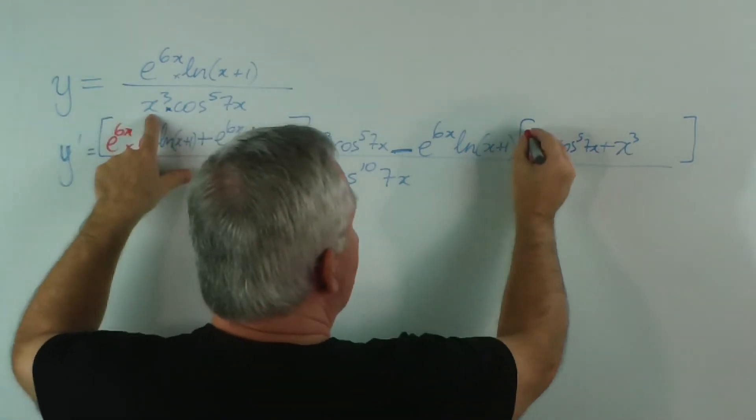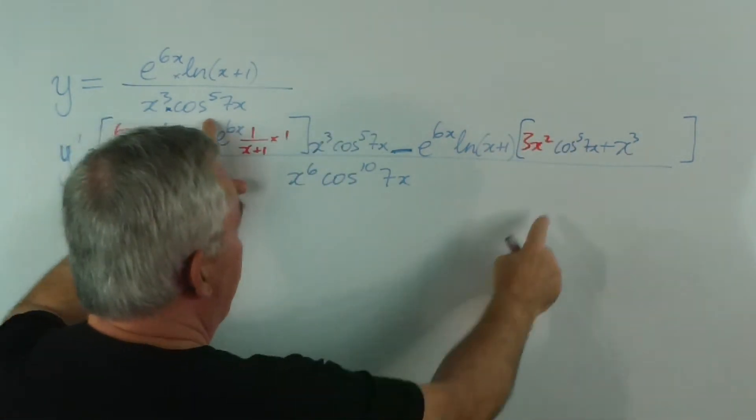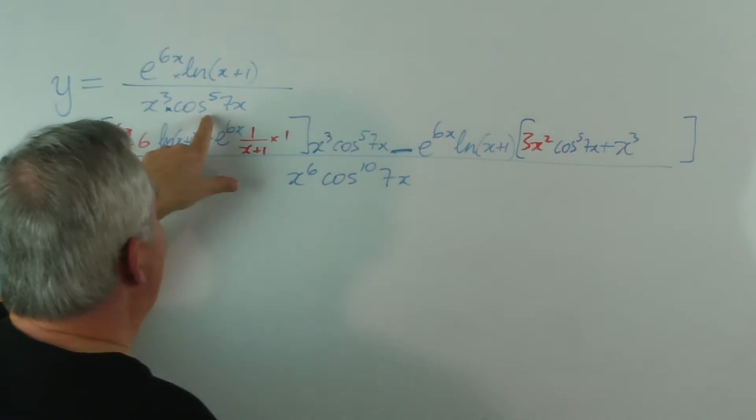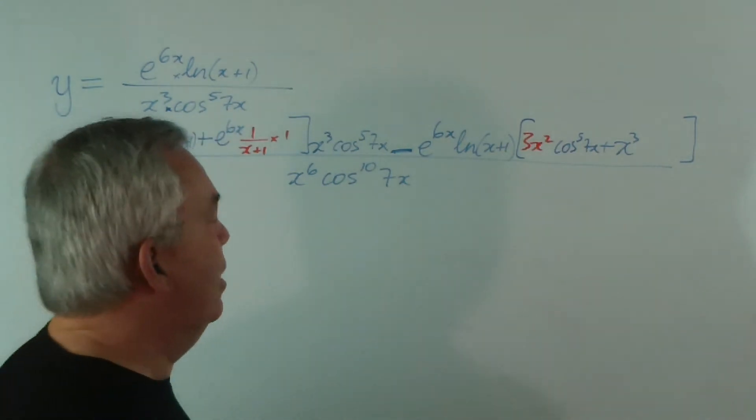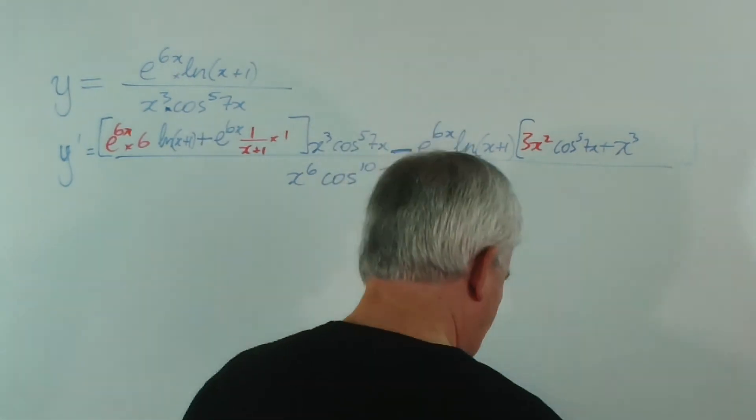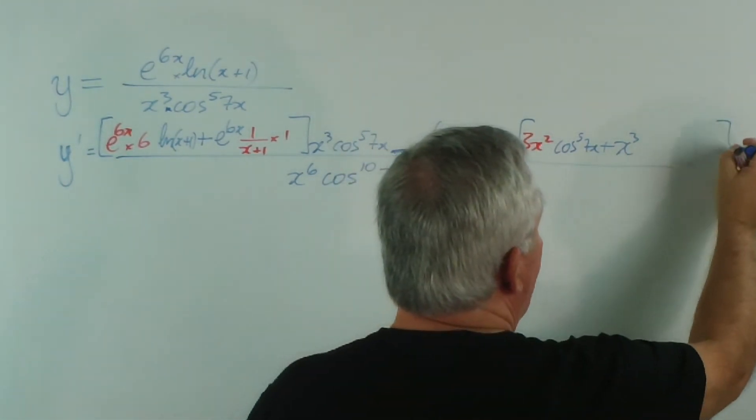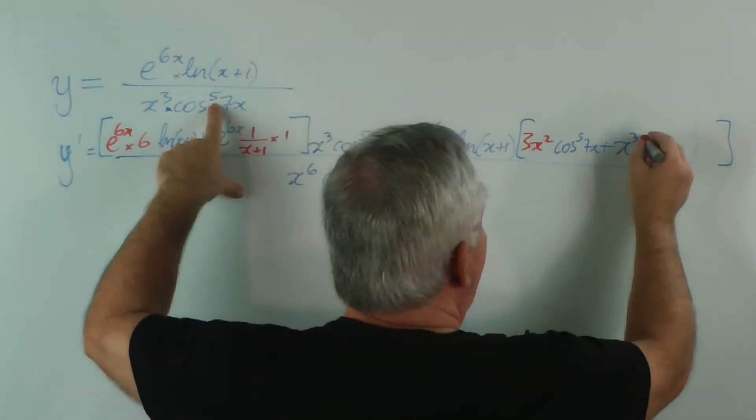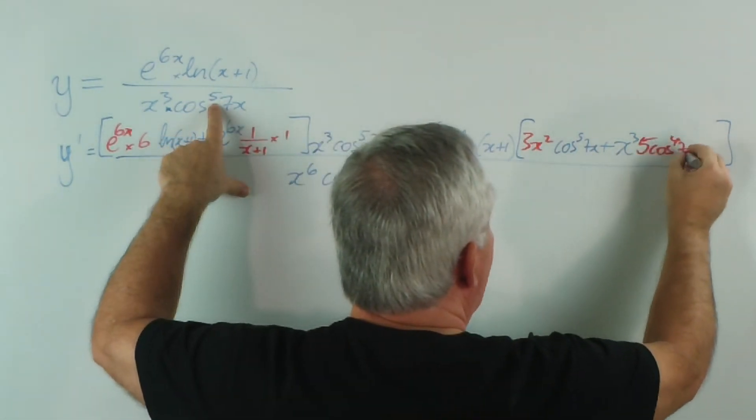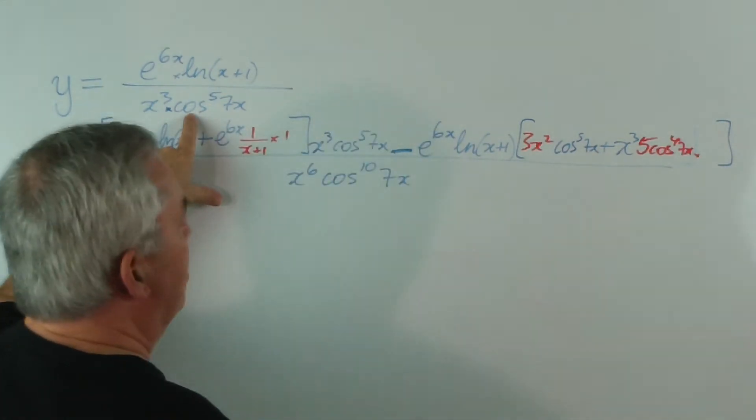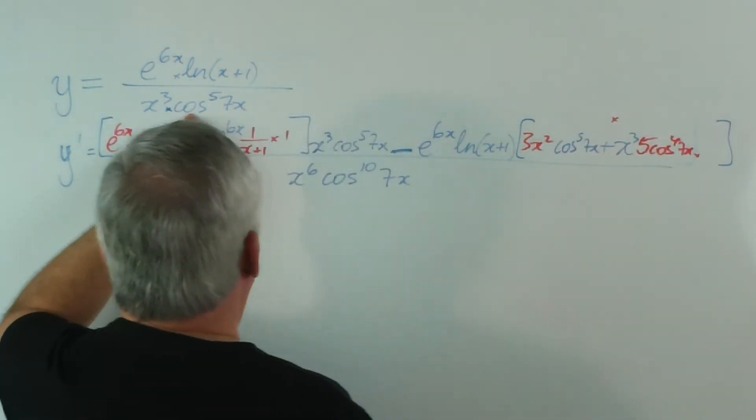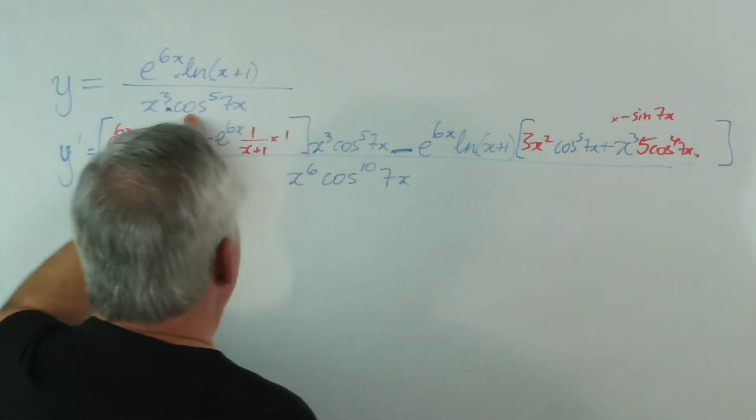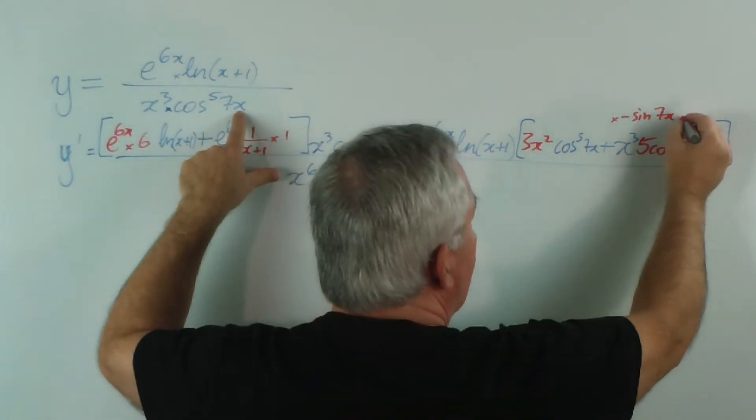When I come to find this, I find the derivative of x³ is 3x² times the cos⁵(7x), plus the x³ I leave alone, and then I find the derivative of cos⁵(7x), which is actually a little bit longer than this. So, I should have that bracket a little bit further over. I deal with the 5th power first, so that's going to be 5cos⁴(7x), times the derivative of cos is minus sin, and then multiplied by the derivative of 7x, which is 7.